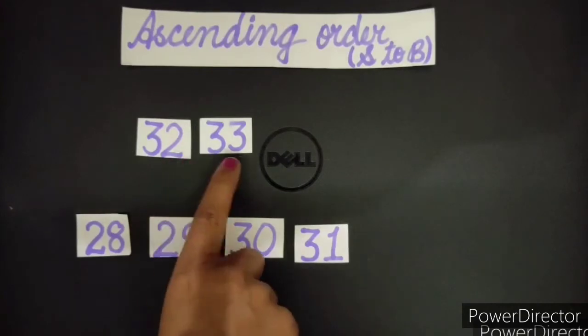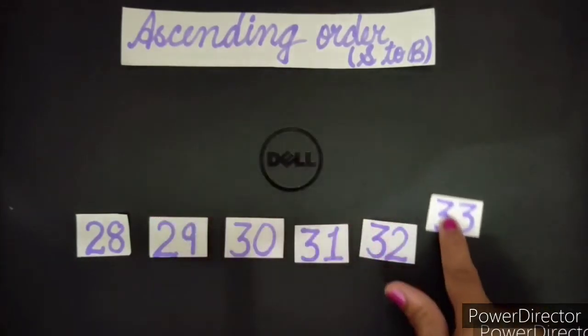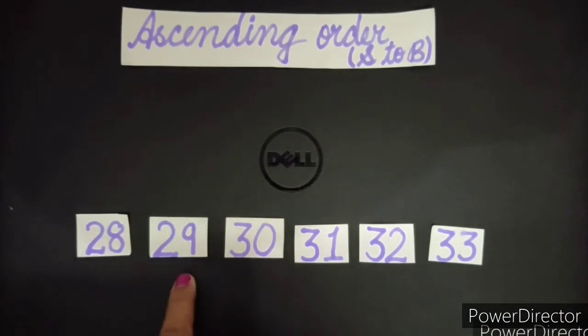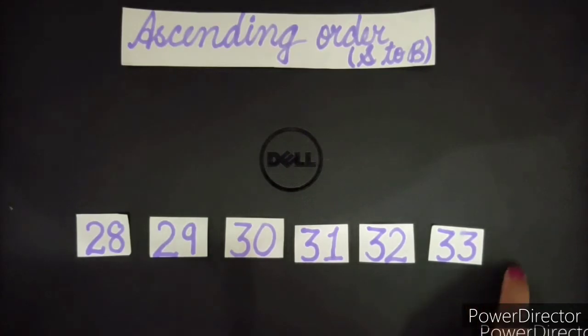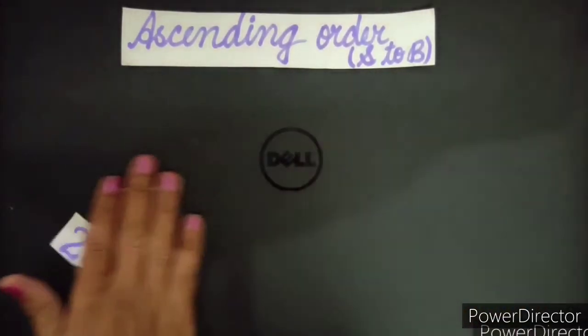Right? Now among 32 and 33 which is smaller. This 32 is smaller and this is biggest here. So 28, 29, 30, 31, 32, 33. Ascending order. Increasing order. Now it was about ascending order. Let's talk about descending order.